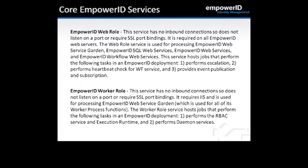The Empower ID worker role service requires IIS and is used for processing Empower ID Web Service Garden requests for all worker process functions. The worker role service hosts jobs performing tasks such as RBAC service and execution runtime, and all daemon services. Any automated, long-running processes requiring additional worker threads to be spawned will use that web service garden.